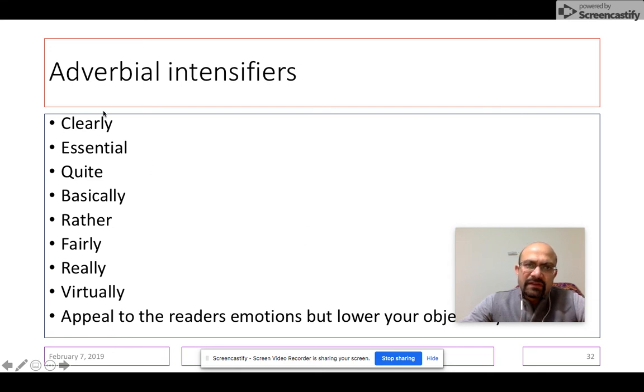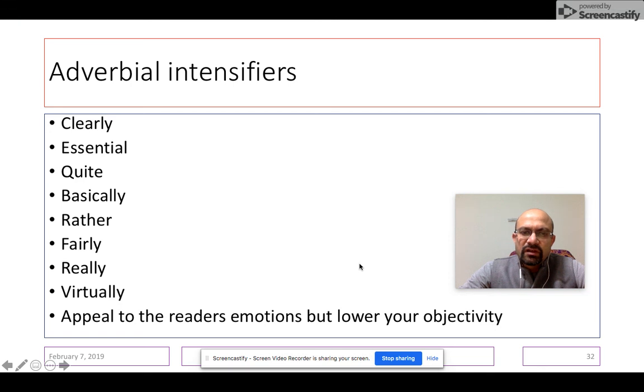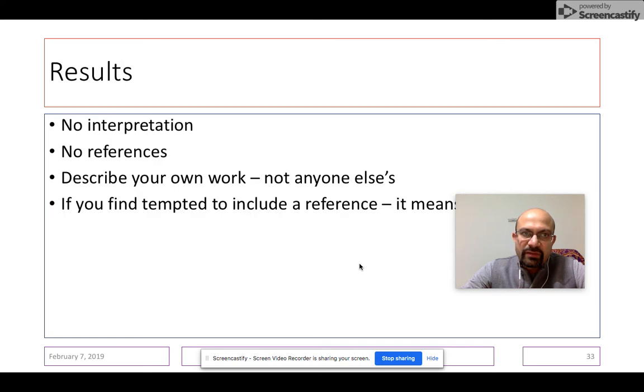Usually in the results, we do not use adverbial intensifiers such as clearly, essentially, quite, basically, rather, fairly, really, virtually, because these appeal to the reader's emotions, but they lower your objectivity. Avoid these words in the results section of your paper.